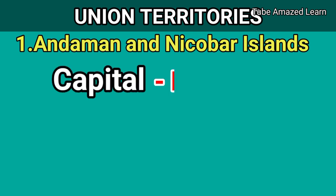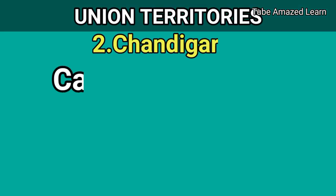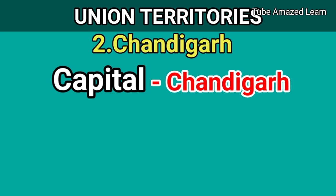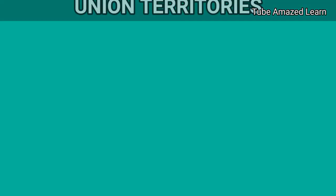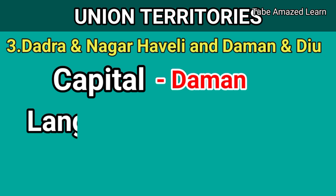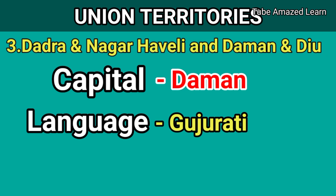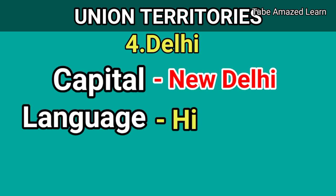1. Andaman and Nicobar Islands — capital Port Blair, language Bengali. 2. Chandigarh — capital Chandigarh, language Punjabi. 3. Dadra and Nagar Haveli and Daman and Diu — capital Daman, language Gujarati. 4. Delhi — capital New Delhi, language Hindi.